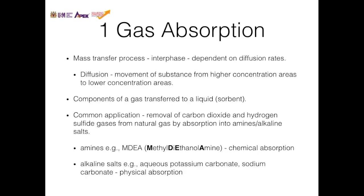Inside a gas absorption column, a mass transfer process occurs. It is an interface process dependent on diffusion rates between the two phases. Diffusion is defined as the movement of a substance from a higher concentration phase to a lower concentration phase. The components of a gas will be transferred to a liquid, also known as a sorbent. A common application of gas absorption is to remove carbon dioxide and hydrogen sulfide gases from natural gas by absorption.